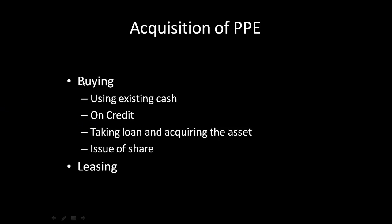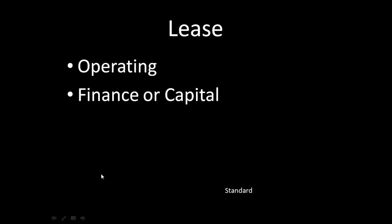In case of buying an asset, the accounting treatment is very direct — it results in acquisition of an asset and a corresponding source, or a corresponding reduction in cash on hand. But if you don't buy an asset but instead lease an asset, leasing is in principle getting the right to use the asset. In case of buying, you also get the right to use and the right to sell, but in case of leasing, you are actually getting the right to use the asset. So the accounting treatment of the lease depends on the purpose and the types of the leases.